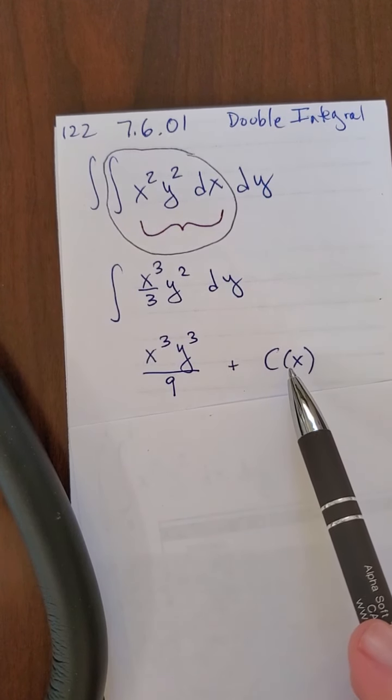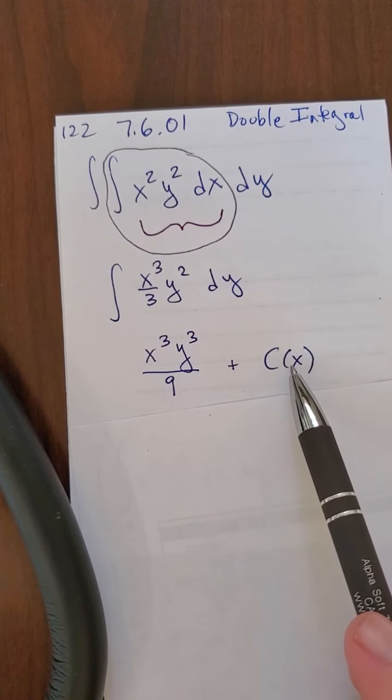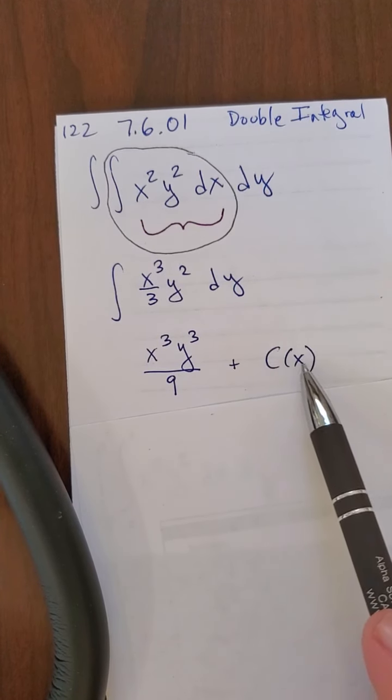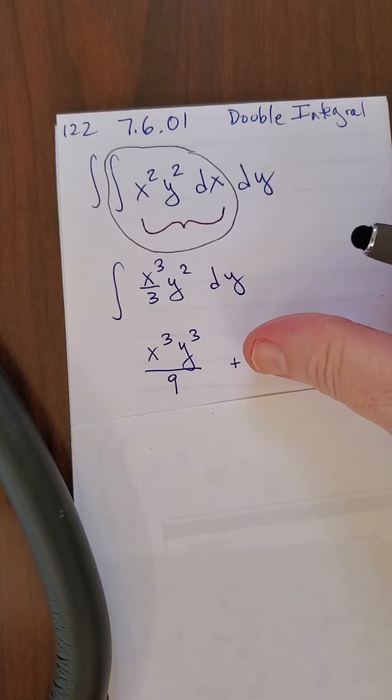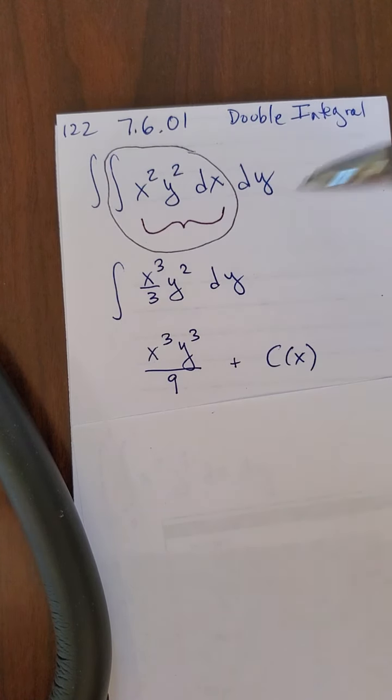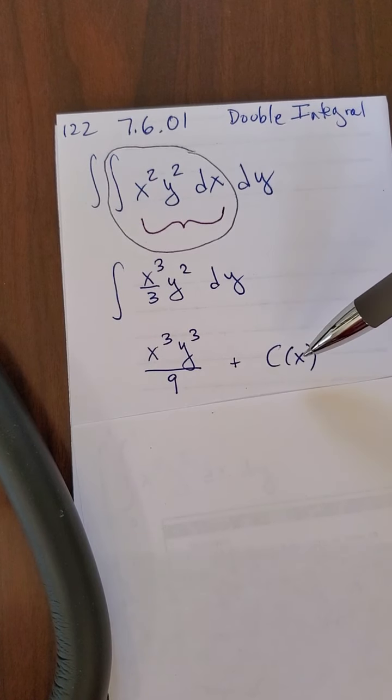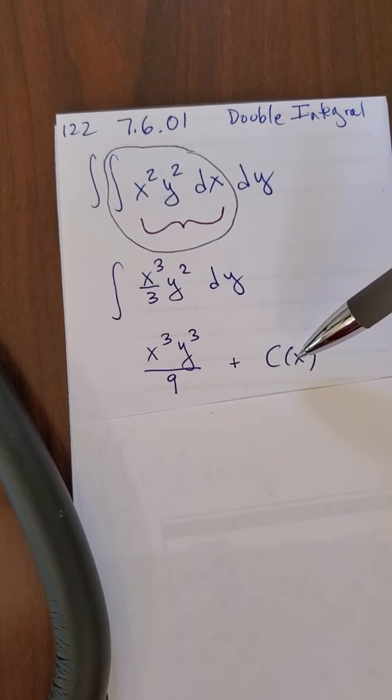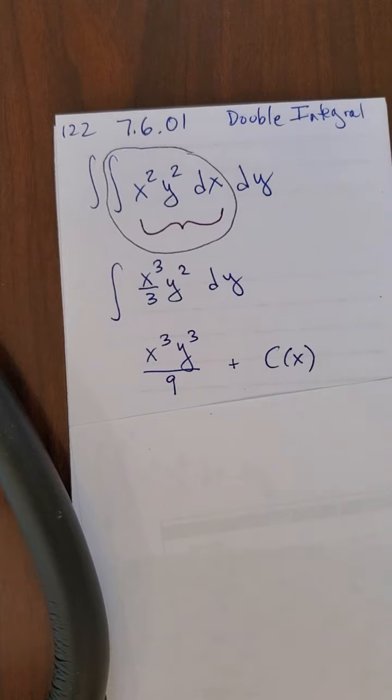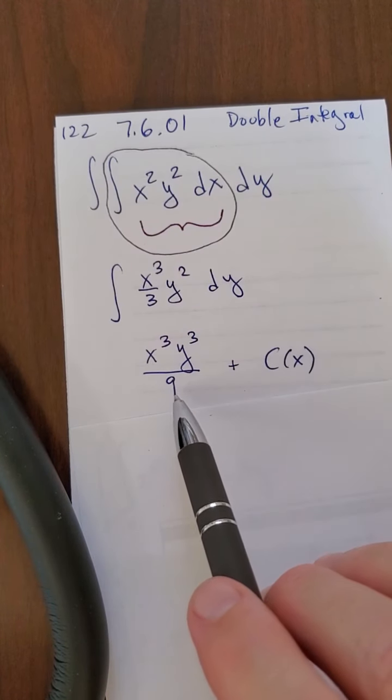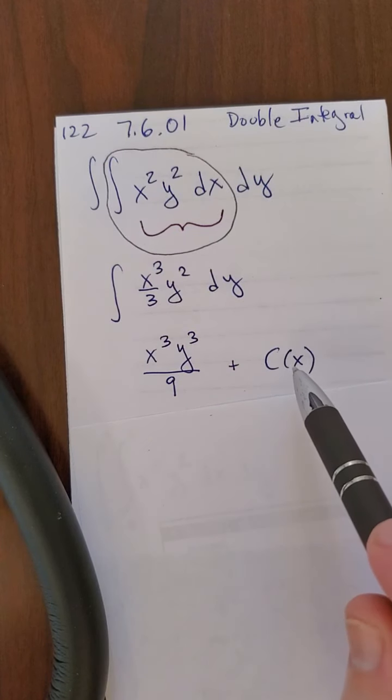it doesn't have any, but not of y. Well, when I take the derivative of this final answer, this whole guy is going to disappear. So, therefore, if I had that c of it, because my first step is with respect to y, so that's why I'm adding not just c, but c of x. Because anything, if I had, for example, I had x cubed y cubed over 9 plus x to the 9th power.